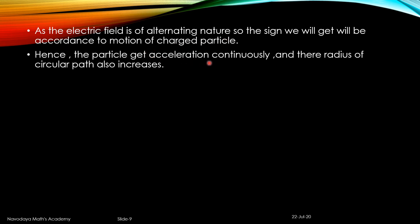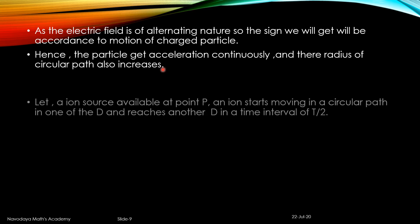Hence the particle gets acceleration continuously and the radius of the circular path also increases. The electric field continuously provides acceleration to the charge particle and due to this, the radius continuously increases. As the radius increases, the circular path becomes larger. A time will come when it moves at maximum radius, and the magnetic field acts on it and it exits — as shown in the second figure.